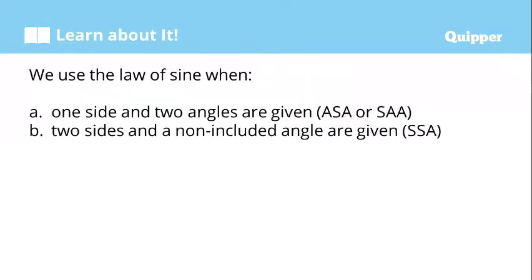When to use the law of sine. We use the law of sine when one side and two angles are given. It can be ASA or SAA. Second, two sides and a non-included angle are given, that is SSA.